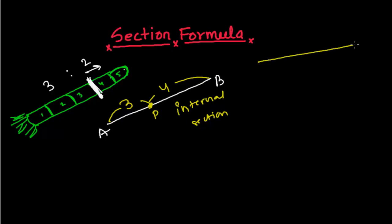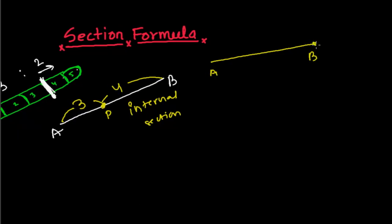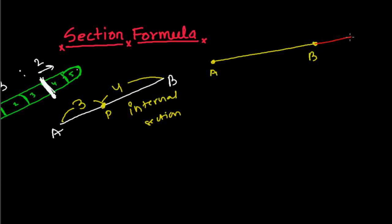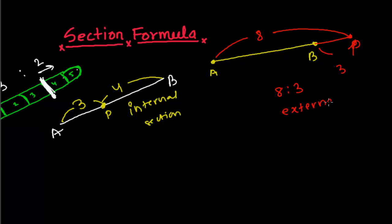Sometimes what happens — consider a line with points A and B. If we extend beyond B up to point P, then this P point is also dividing AB, but not internally — externally. Suppose it divides in the ratio 8:3, then P is dividing line AB in the ratio of 8 to 3, but externally. For now, we are only dealing with the internal section.